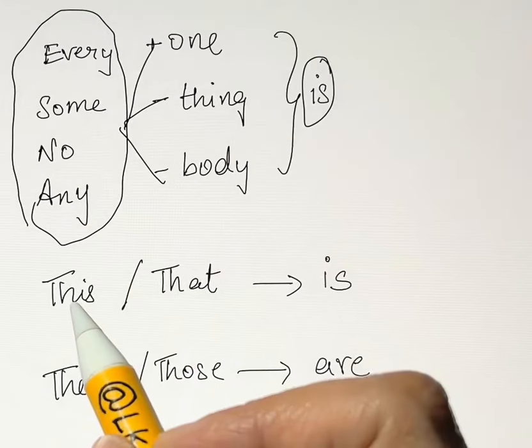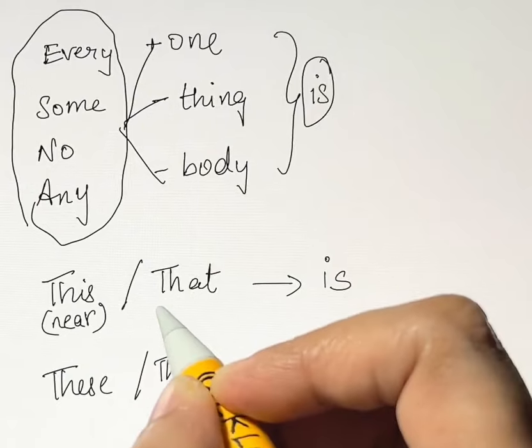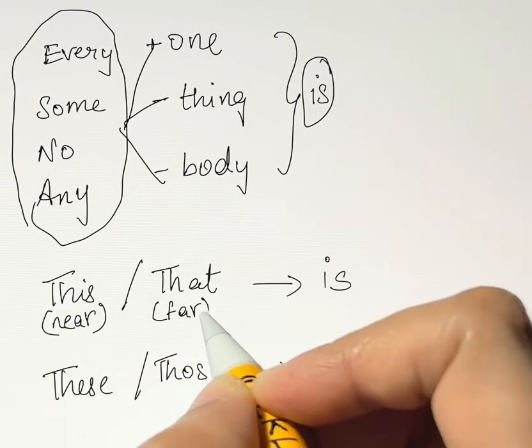Now there is one more difference between them. This as a singular subject means something is near, and that as a singular subject means something is far, it's kept far.